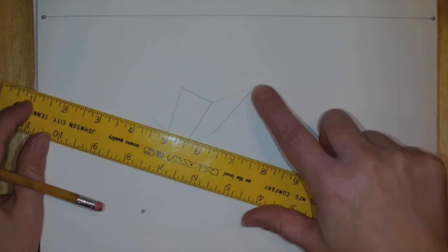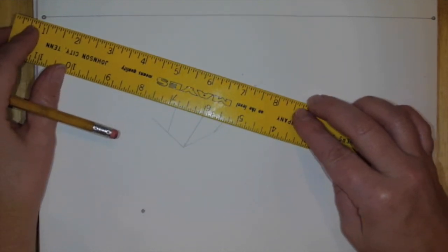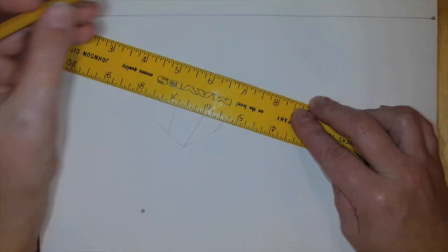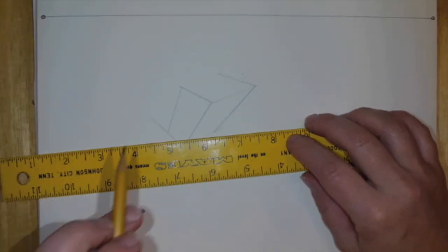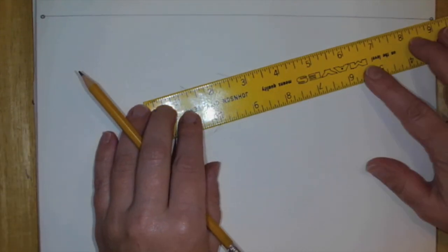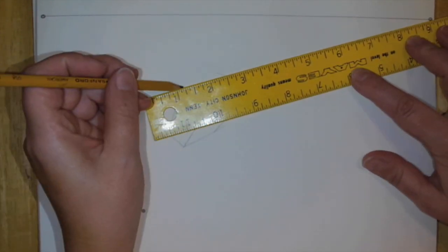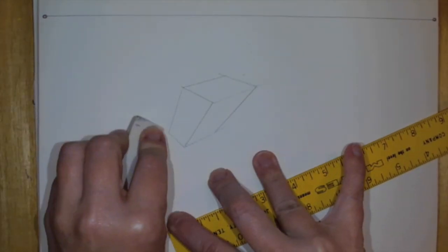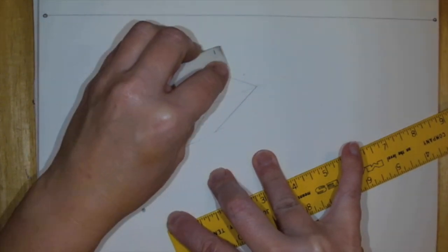Now I'm going to take from my right back corner to the left vanishing point that is on the top, and I'm going to take my left back corner and go to the right vanishing point on my horizon line. And here I have one box in three-point perspective.